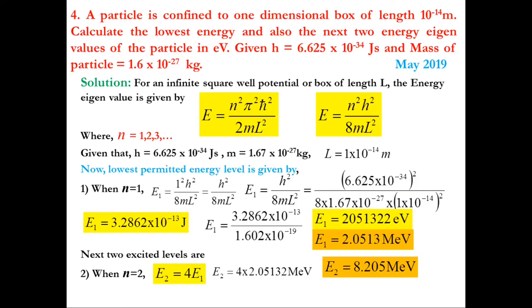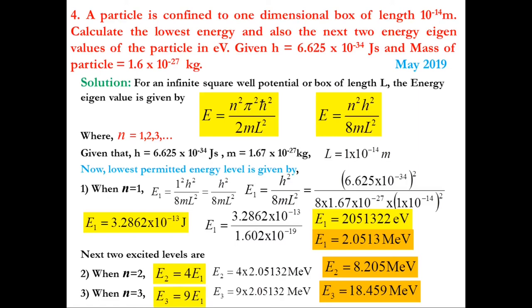For n = 3 (second excited state): E₃ = 9E₁, since 3² = 9, giving 9h²/(8mL²). Substituting E₁, we get E₃ = 9 × 2.0513 = 18.459 MeV.